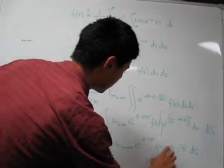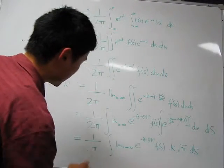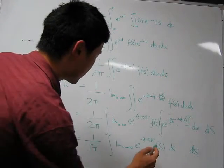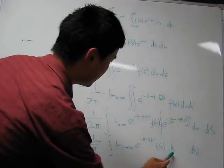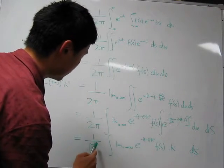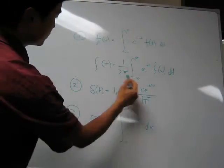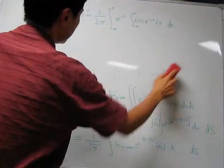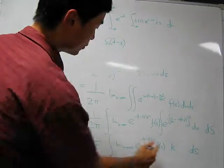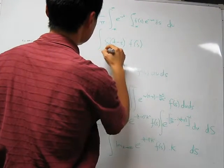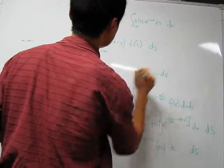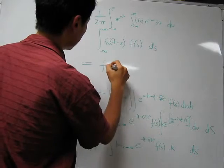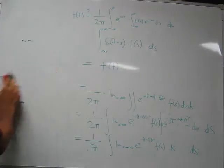The factor of 2 cancels, and root π partially cancels with the π in the denominator. What remains is the limit as k tends to infinity of k times e^{-(t-s)²k²} divided by root π — and this is precisely the delta function of (t − s), multiplied by f(s), integrated from negative infinity to positive infinity over s. According to the property of the delta function proved just a moment ago, this integral equals f(t). So there you have it — the Fourier theorem.